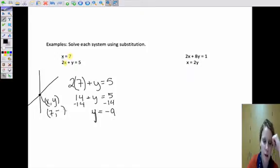And y is going to equal a negative 9. Alright? So this point is 7, negative 9, where these two lines meet.